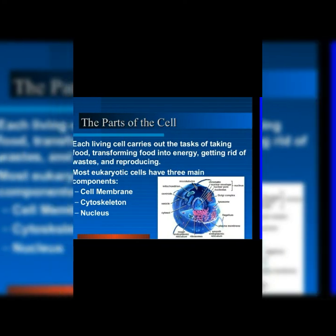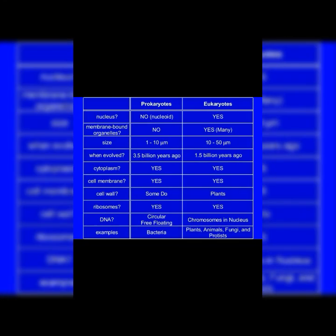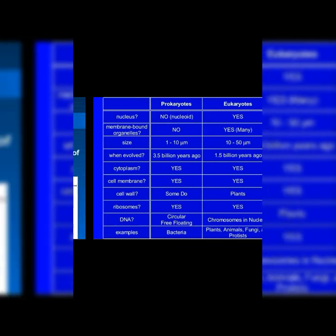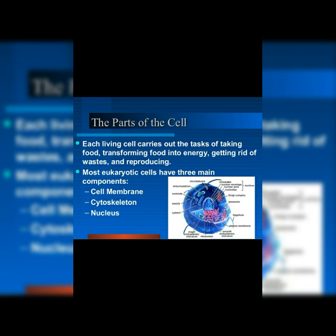Examples: prokaryotic cells — bacteria; eukaryotic cells — plants, animals, fungi, and protists. In the next lecture we will start the parts of the cell. Thank you.